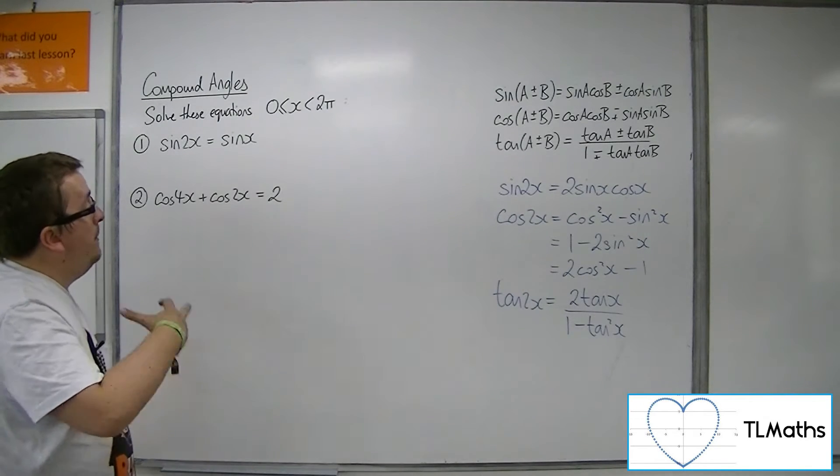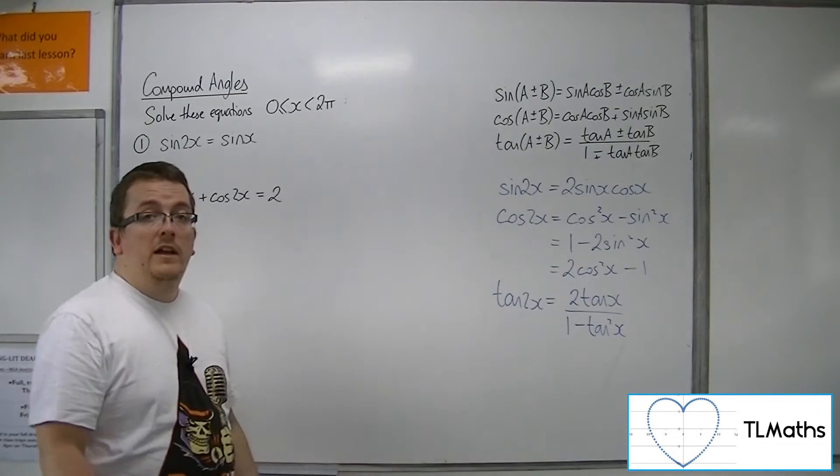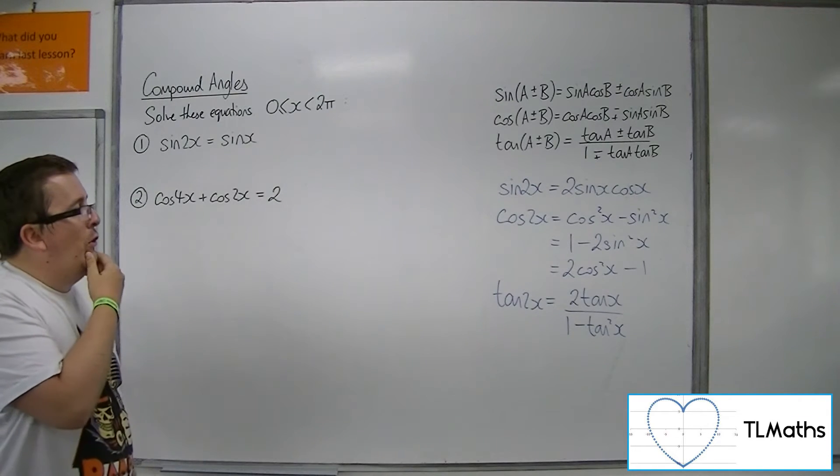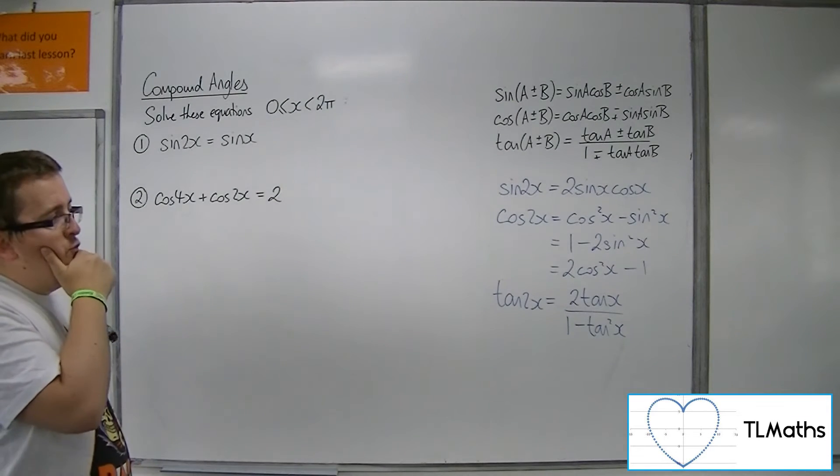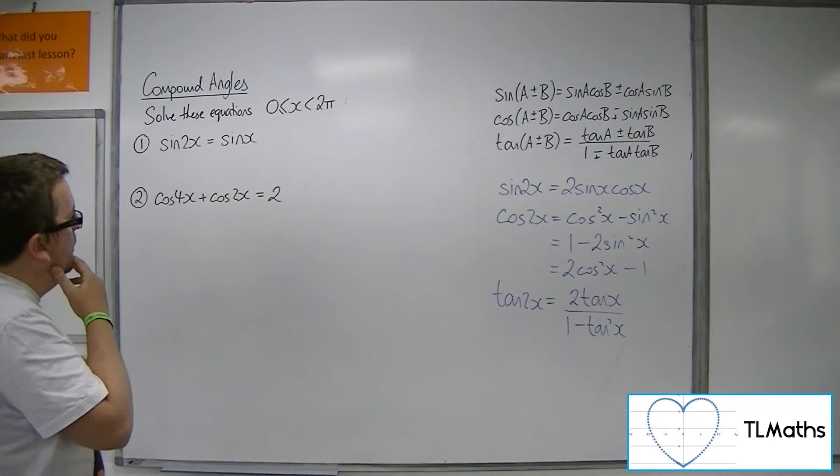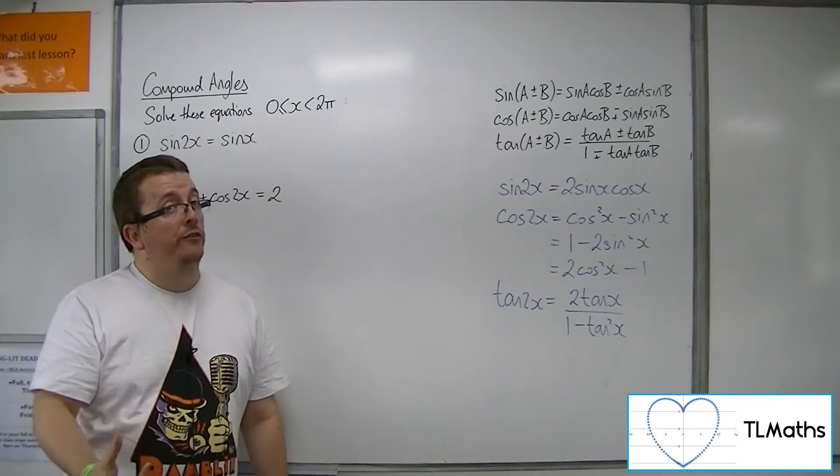Now ordinarily we might be thinking, right, so we've got cos of 2x, I want to go straight in and use one of the double angle formulas that we've got. But the problem is that cos of 4x. So really what you want to do is you want to think about, is there some way of writing cos of 4x in terms of cos of 2x?